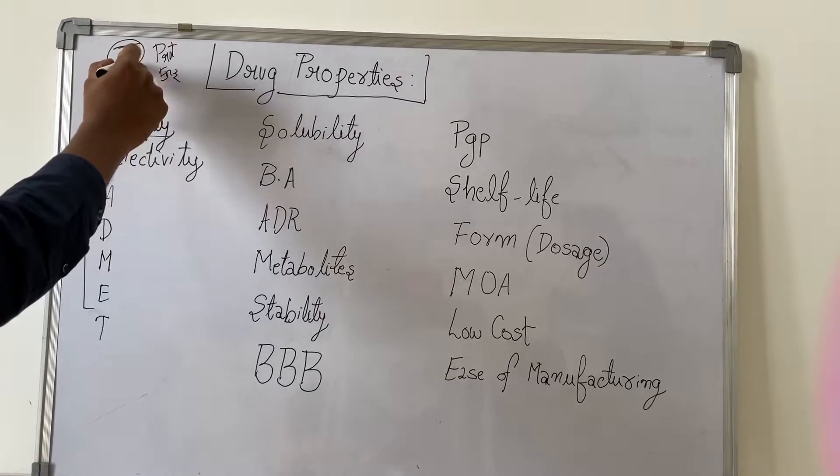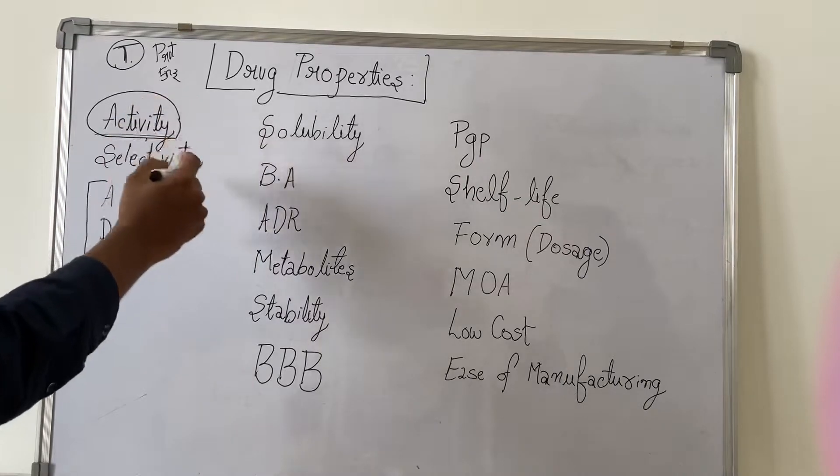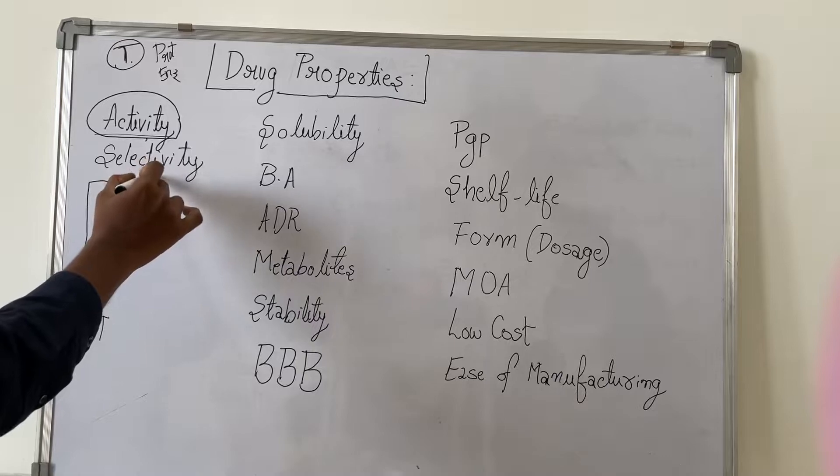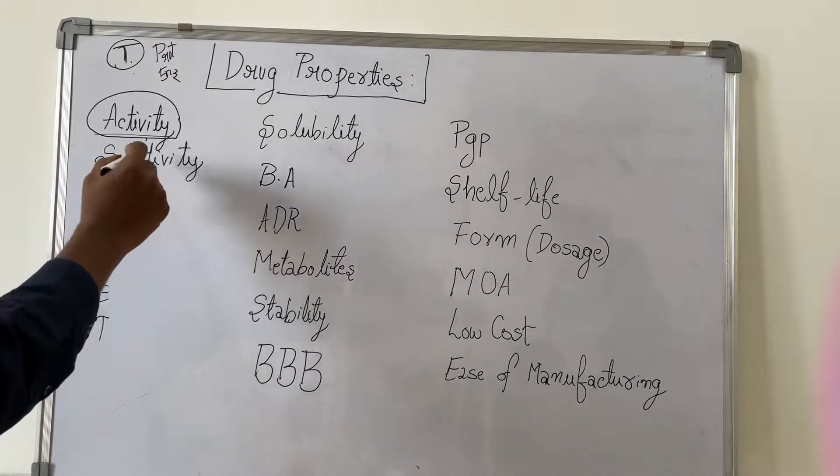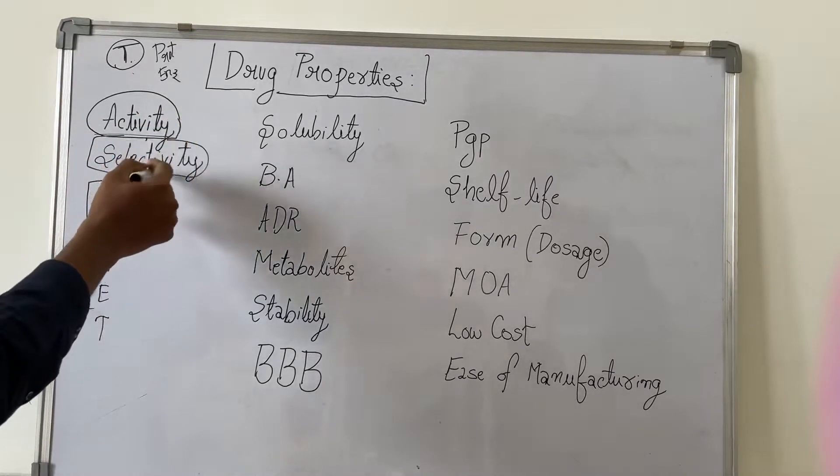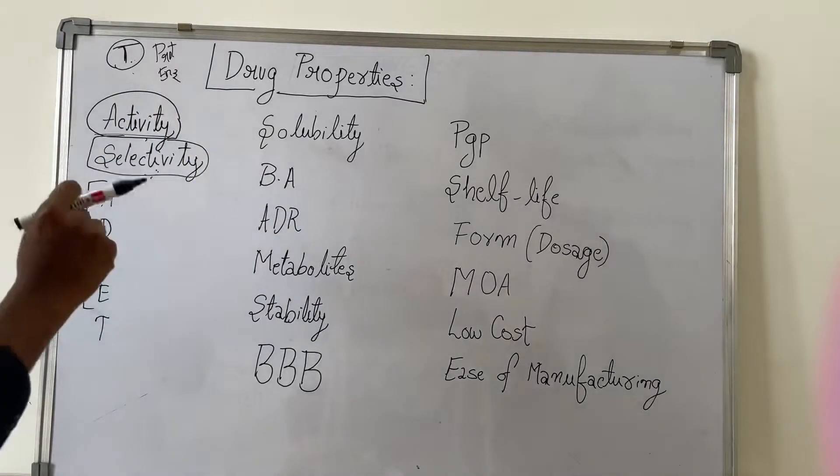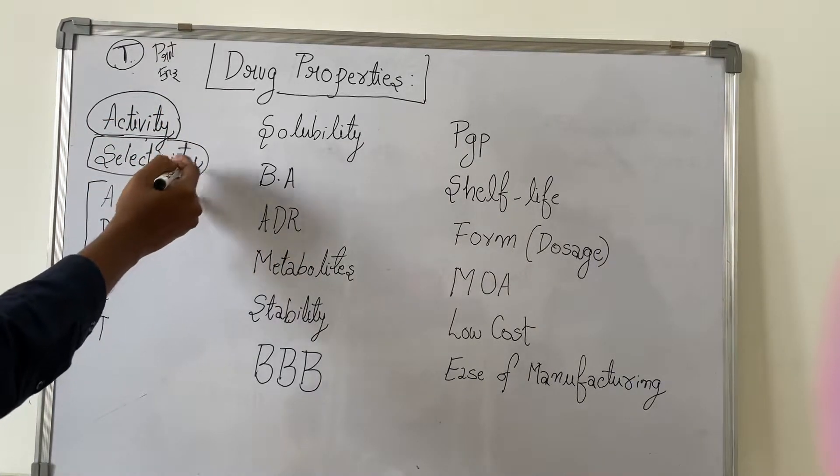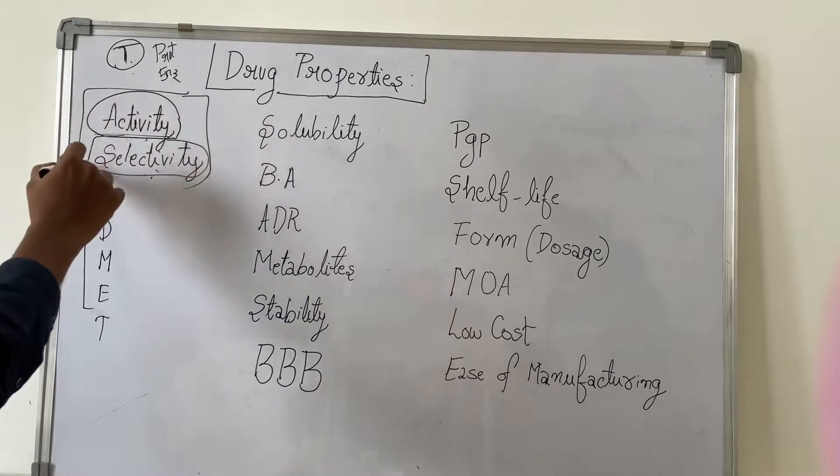Next comes the selectivity. The amount of affinity between the drug candidate and the target is called selectivity. If the drug is not selective, some may show activity with less selectivity also. There should be some optimum selectivity and optimum activity. This will be the first point that they will consider during drug discovery.